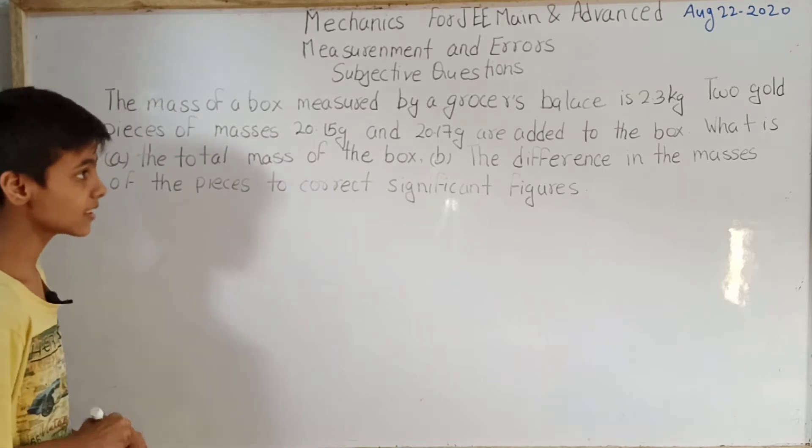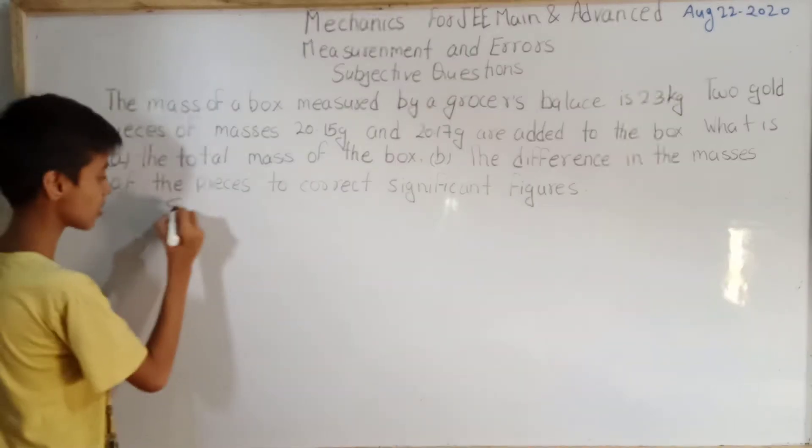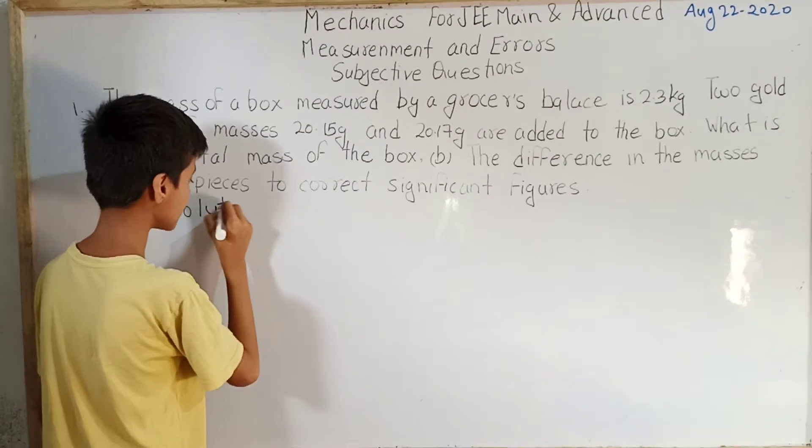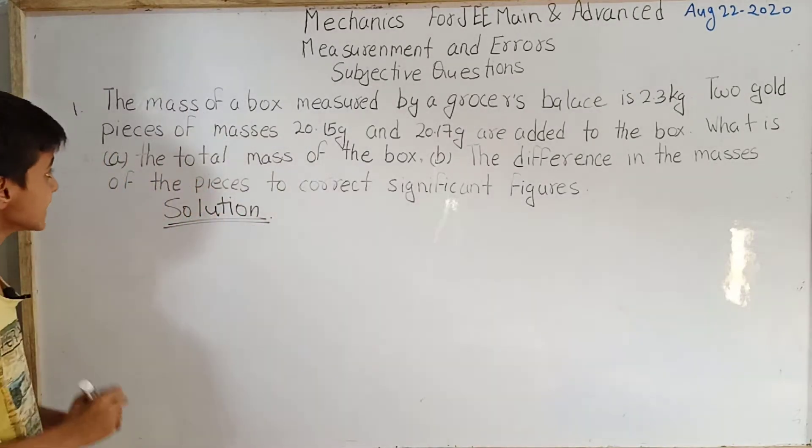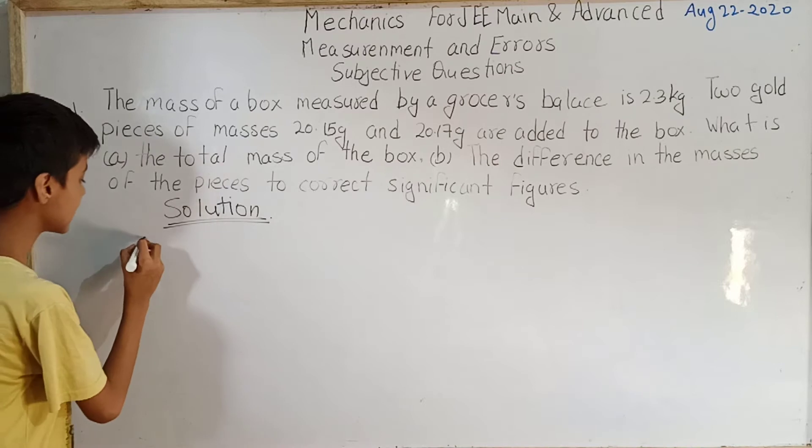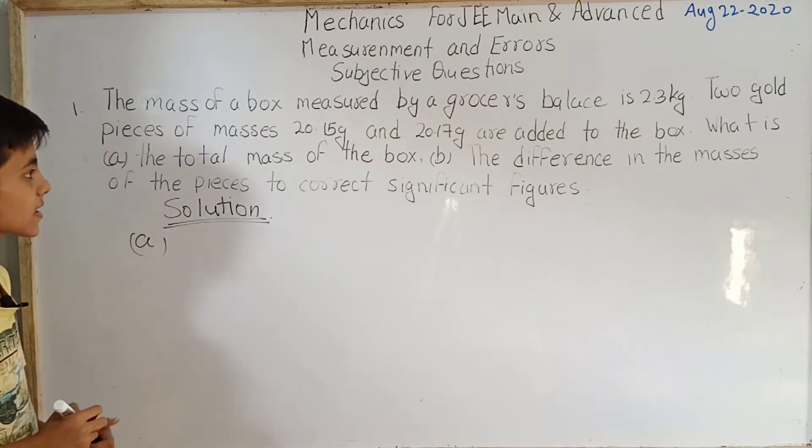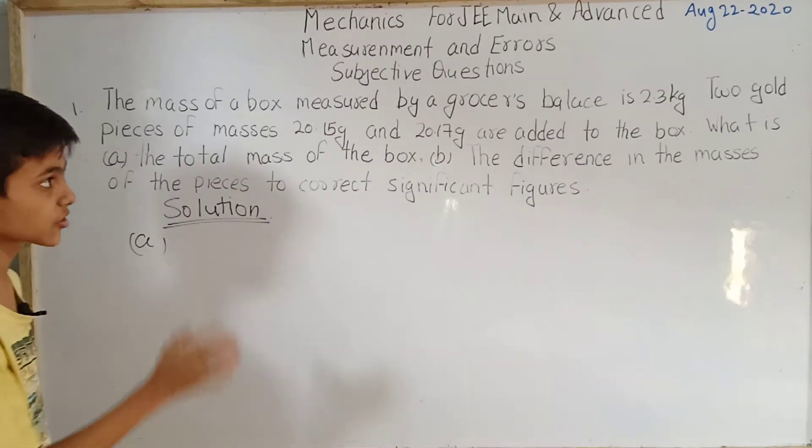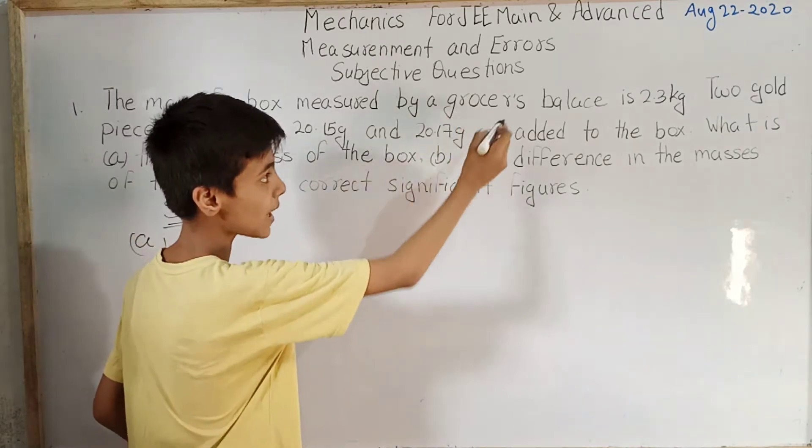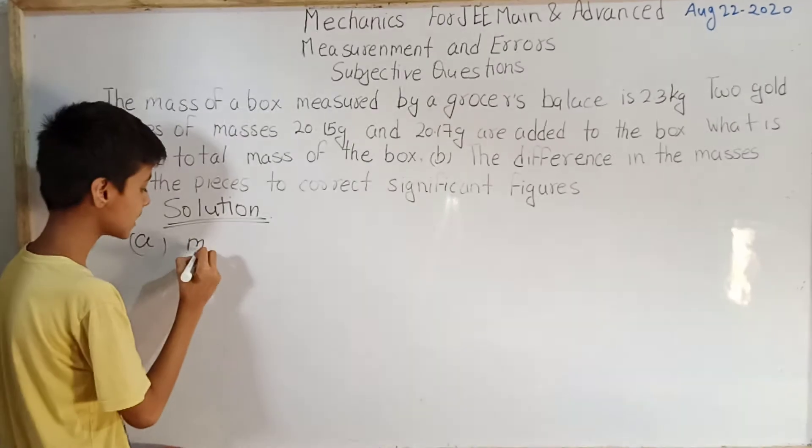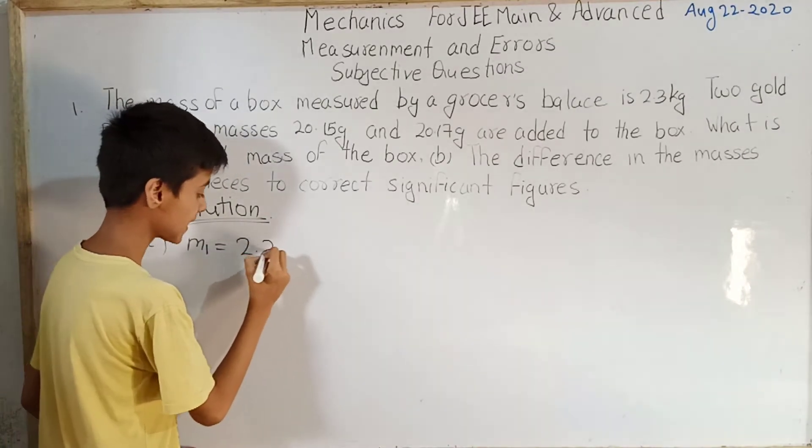Now we will begin the solution. First we will solve for part (a), that is the total mass of the box. Three masses have been given to us. Let us take the first mass, the mass of the box, as m1. So m1 equals to 2.3 kg.